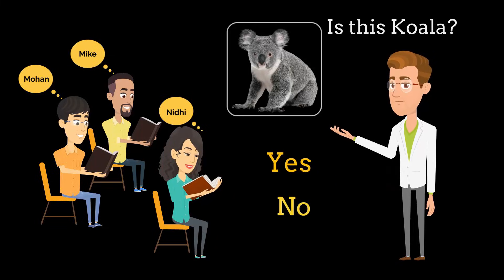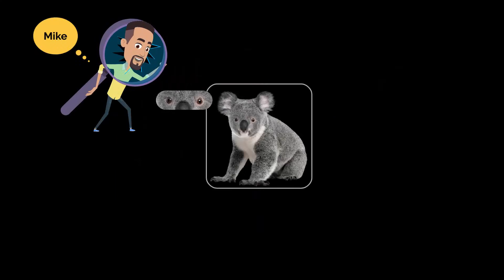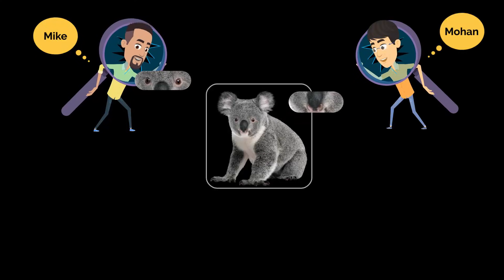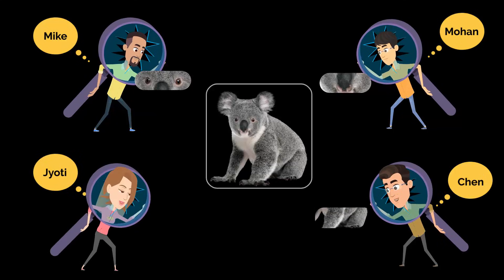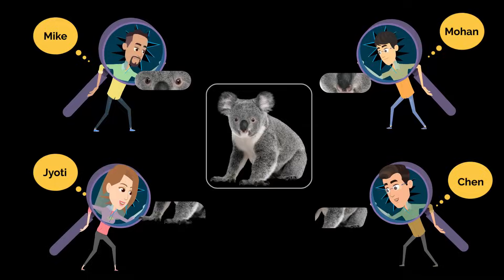You can make this a teamwork and give individual responsibility to each of these students. Mike can work on detecting only eyes, Mohan can work on detecting only nose. So each of these students are working on detecting a specific part of koala's body from an image.